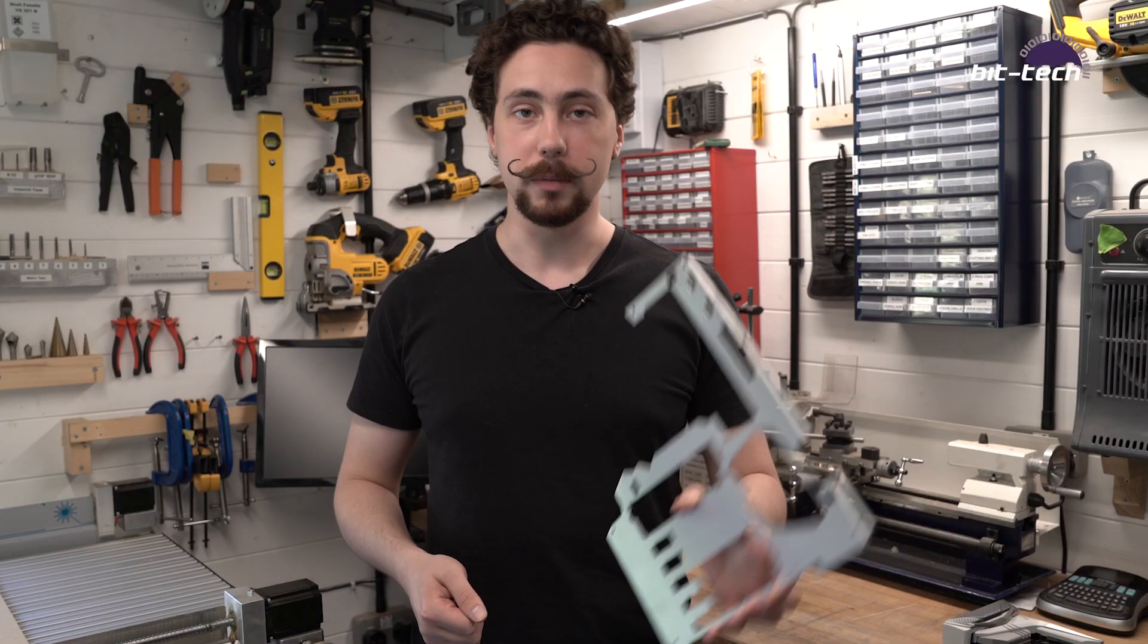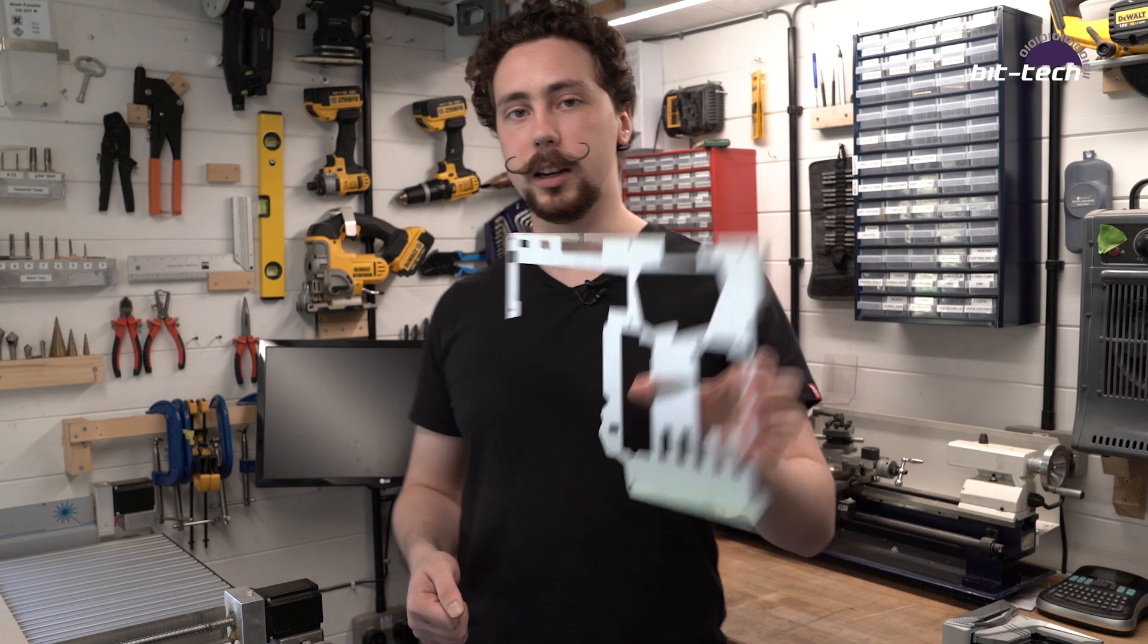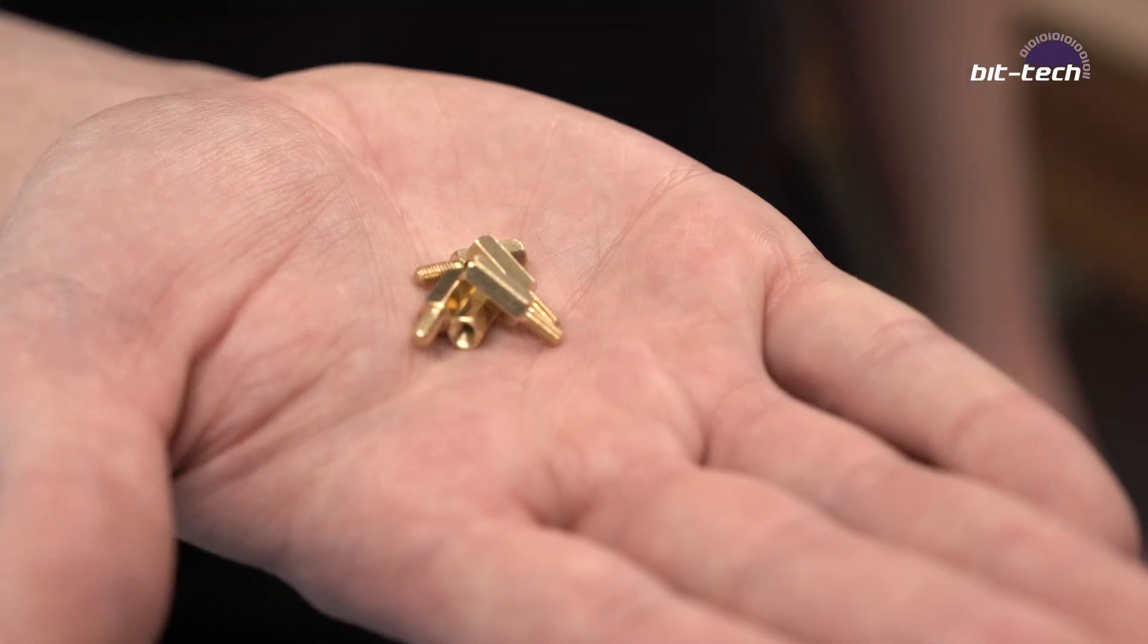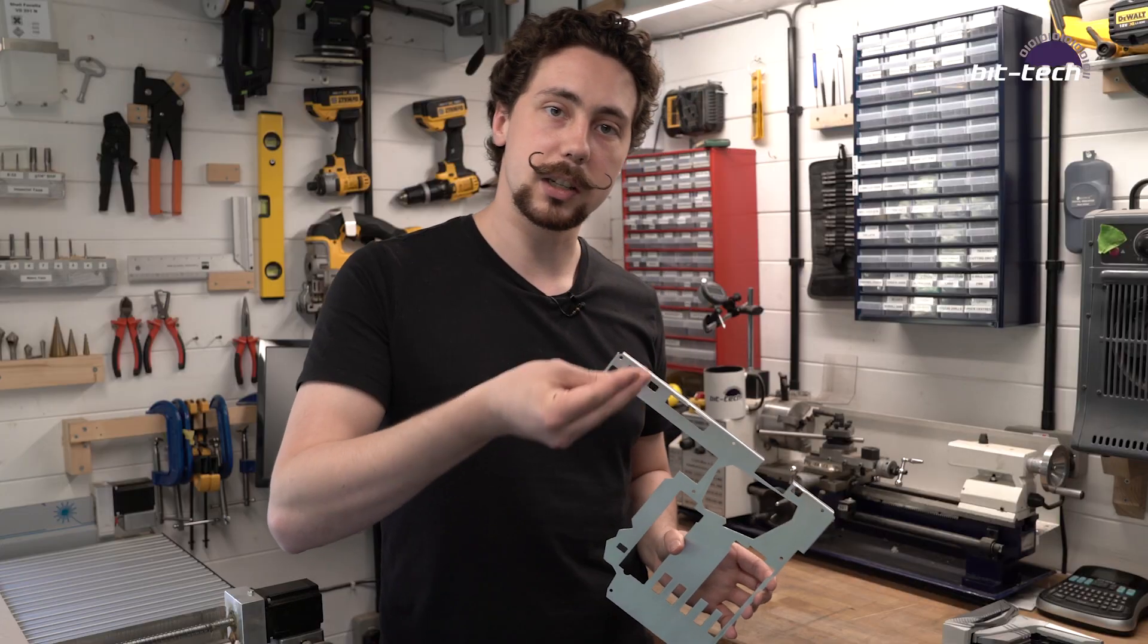So here we are with the finished armor. As you can see, I've plasti dipped this side and it's nice and polished on this side. We're going to be installing it using these 10mm standoffs. You literally just use these instead of the motherboard screws and then screw this on top using the standard screws on top of that. Easy.